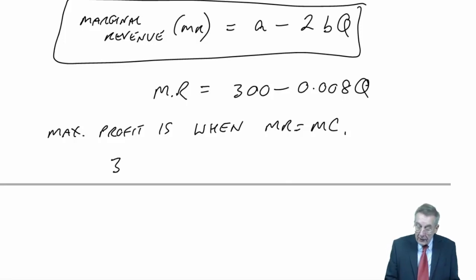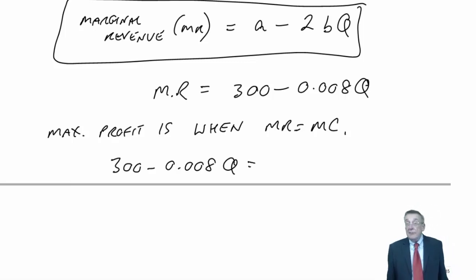We know the marginal revenue, the equation is 300 minus 0.008Q. Marginal cost is the variable cost, the cost of each extra unit, and the variable cost in exercise 5 is 40.